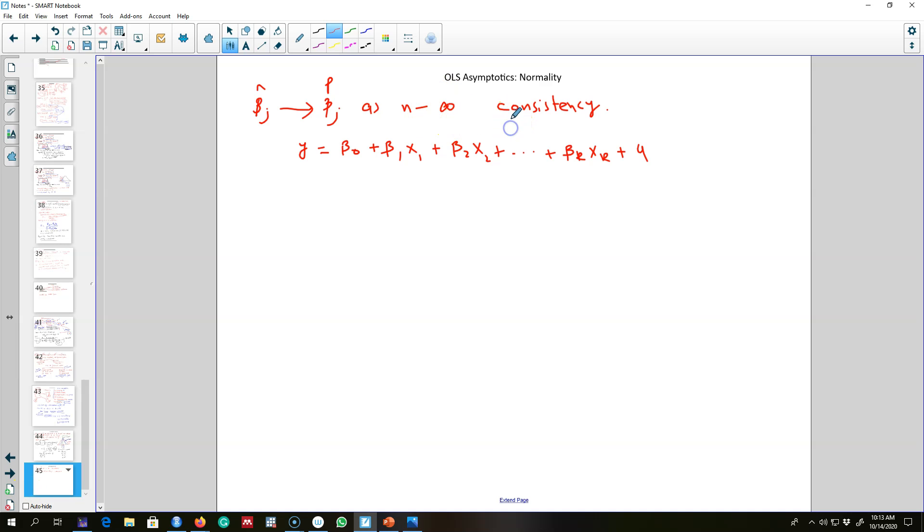Previously I talked about the first asymptotic property of OLS estimator, and that was consistency. Consistency tells us that if n gets larger and larger, when n goes to infinity, our estimated value of any beta coefficient gets closer and closer to the population value.